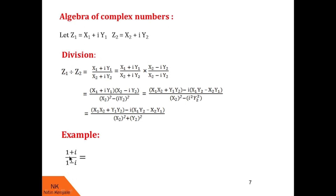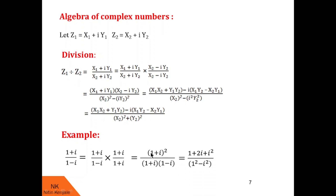For example, to find 1 plus i upon 1 minus i, we multiply and divide by the conjugate of the denominator, which is 1 plus i. The numerator becomes 1 plus i whole squared, which equals 1 plus 2i plus i² equals 1 plus 2i minus 1 equals 2i. The denominator becomes 1 minus i into 1 plus i, that is 1² minus i² equals 1 plus 1 equals 2. So we have 2i divided by 2, and the 2s cancel, leaving just i. So 1 plus i upon 1 minus i equals i.